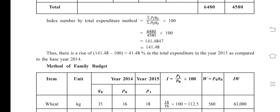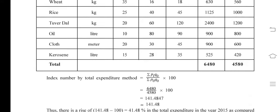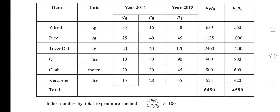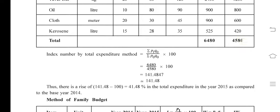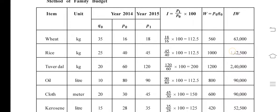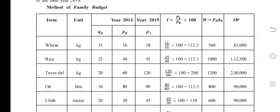For the family budget method, we use the formula P1 divided by P0 into 100. Here P1 is the current year price and P0 is the base year price. You can see clearly that using this formula we can compute the index for each item and arrive at the answer.